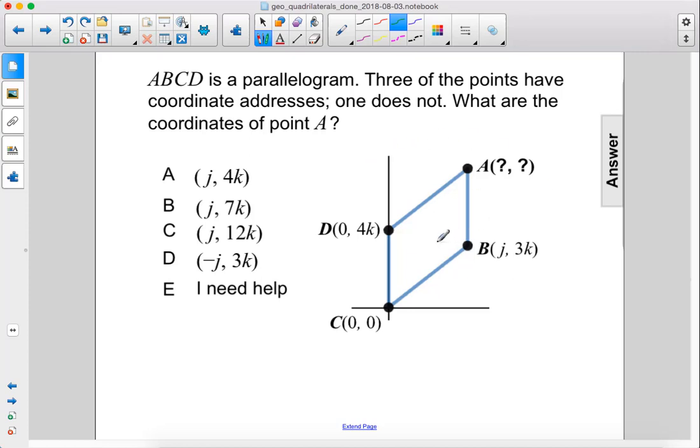ABCD is a parallelogram. Three of the points have coordinate addresses, one does not. What are the coordinates of point A? We have here 0,0 and 0,4k. So here we have j,3k.